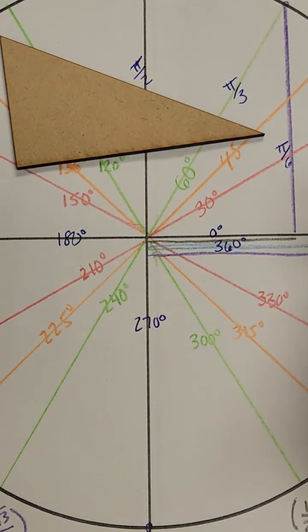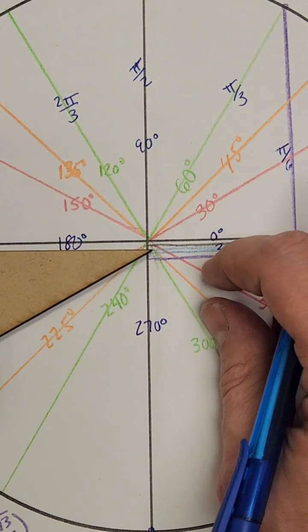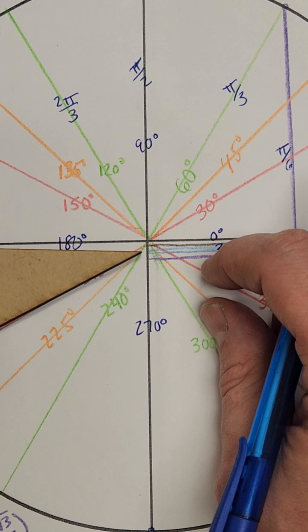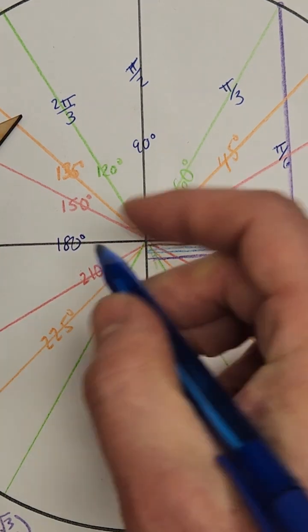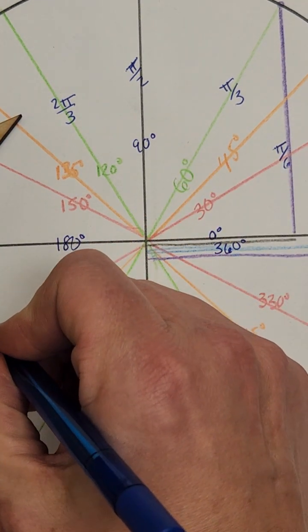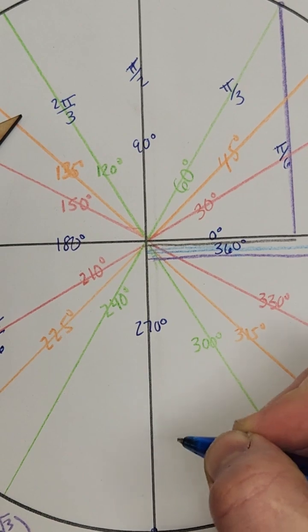Now let's continue on beyond π. This one over here would be our seventh sixth, so this would be 7π/6.